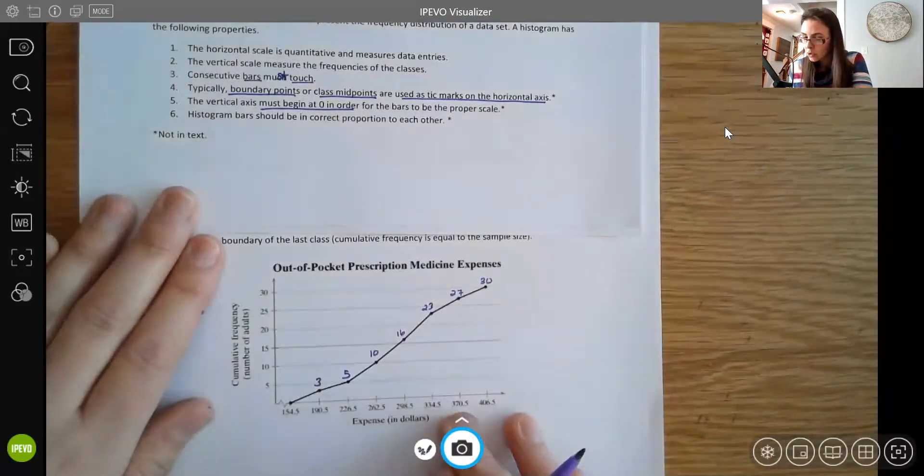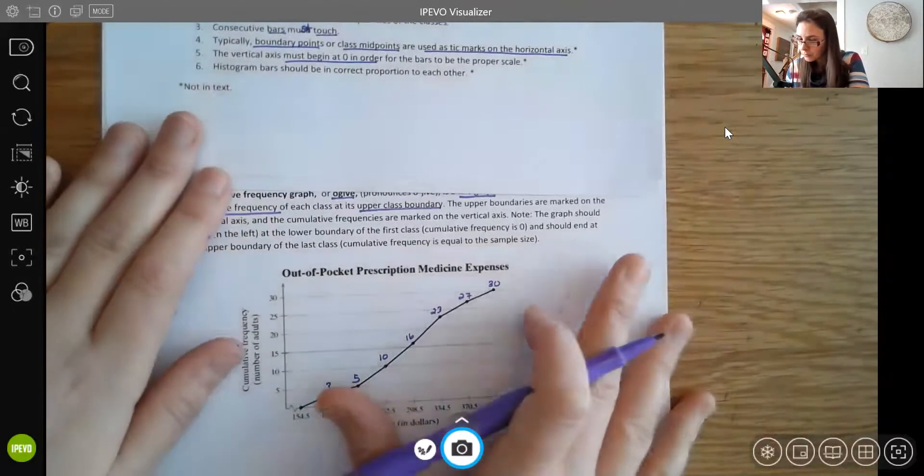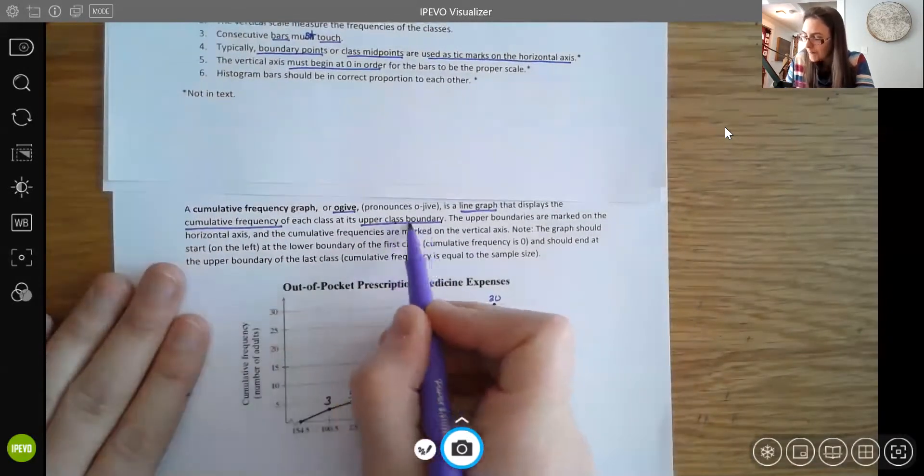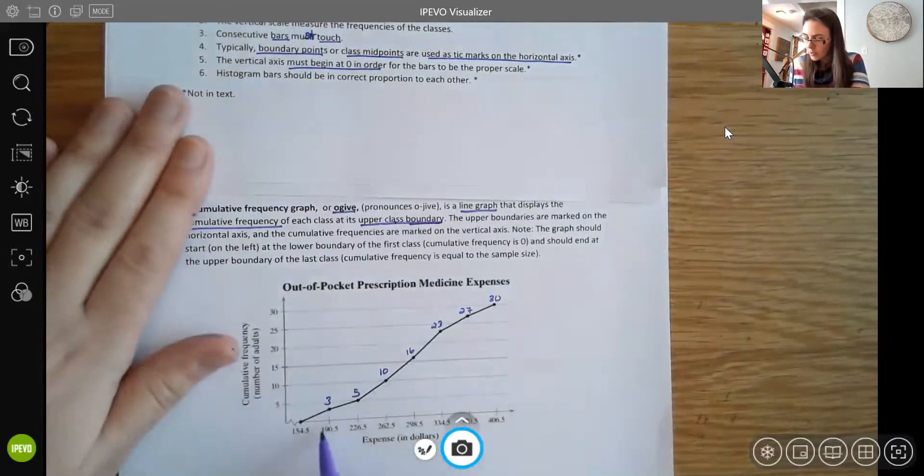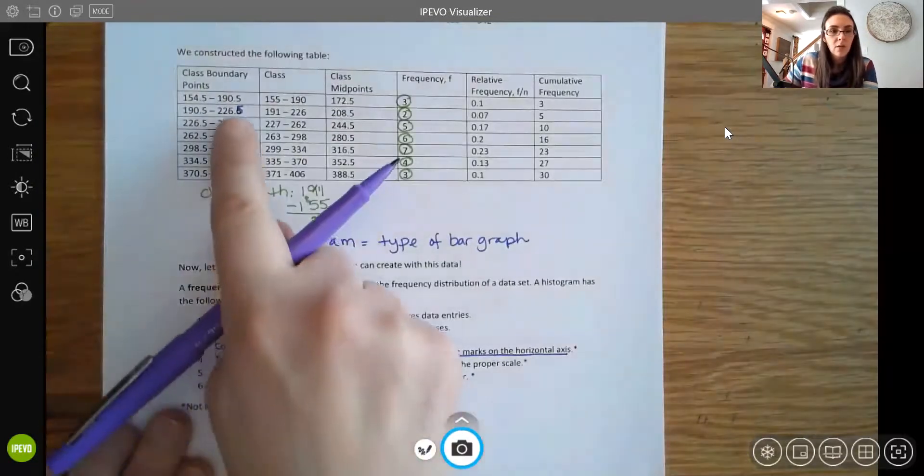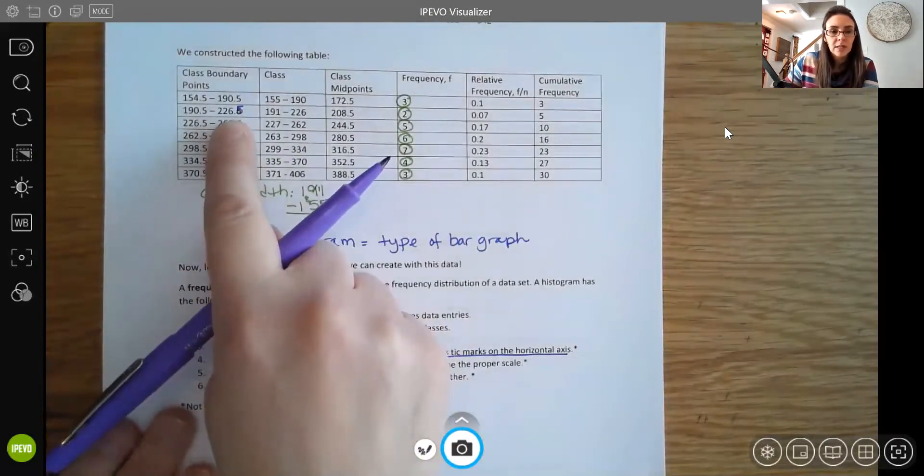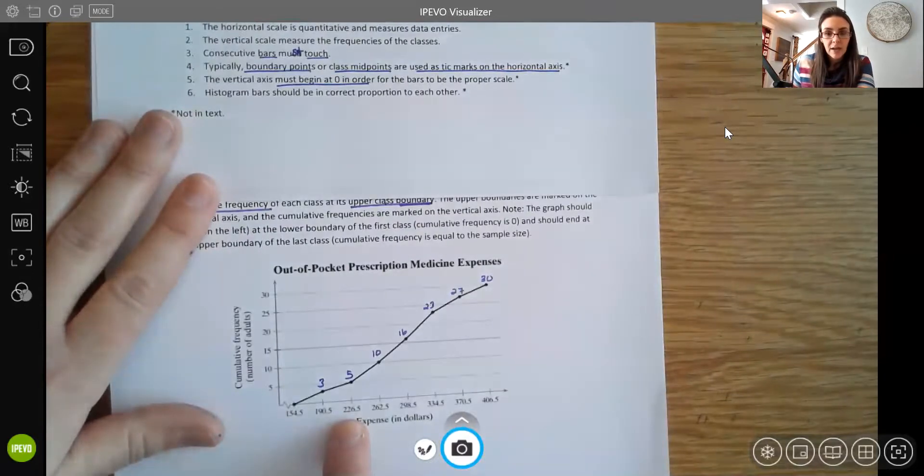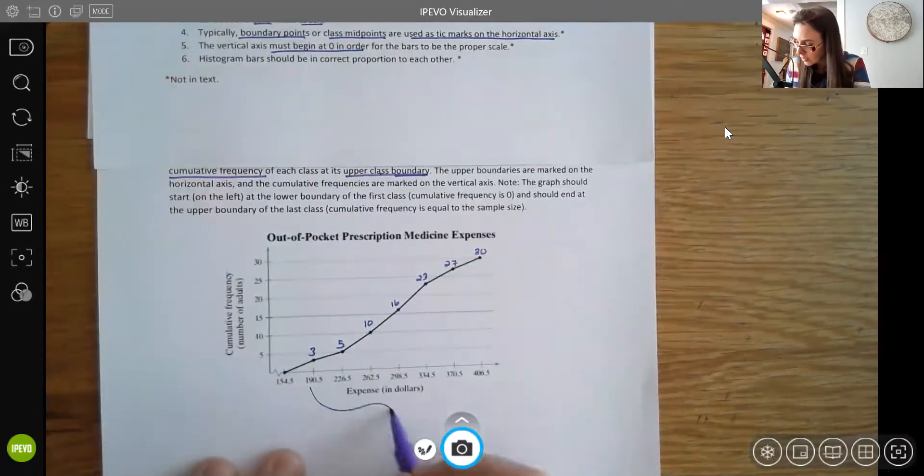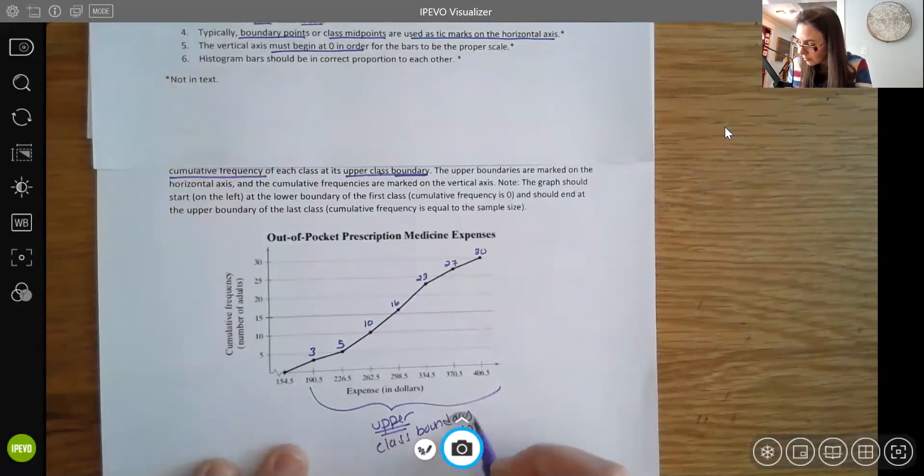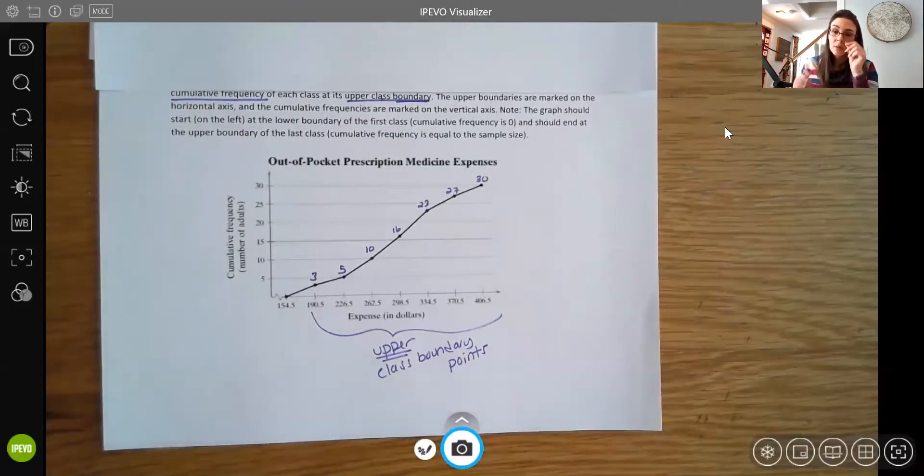And then on the x-axis, you should be using your upper class boundary points. So notice my first one is 190.5, and that's right here, 190.5. And then 226.5, 226.5. And so on. So these values here are your upper class boundary points. We're specifically using those, which makes sense because you should have those totals by the end of that class, not like in the middle, because we're adding everything up. So we use those upper class boundary points.